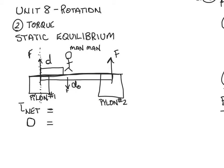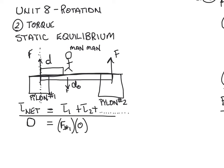Summing up those torques: net torque equals torque one plus torque two, and so on for however many things are producing torque. Torque one is produced by pylon number one. Because we picked pylon one as our axis of rotation, its distance is zero, so pylon one produces zero net torque.